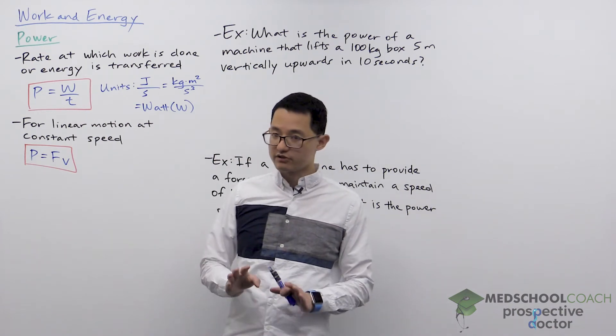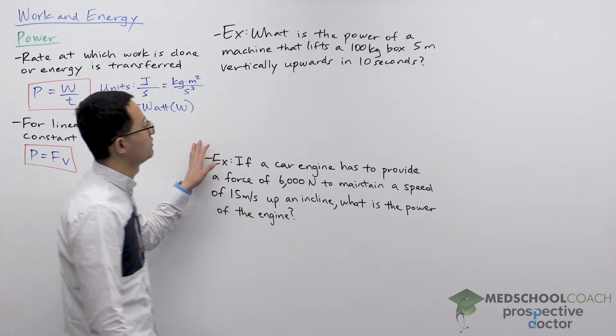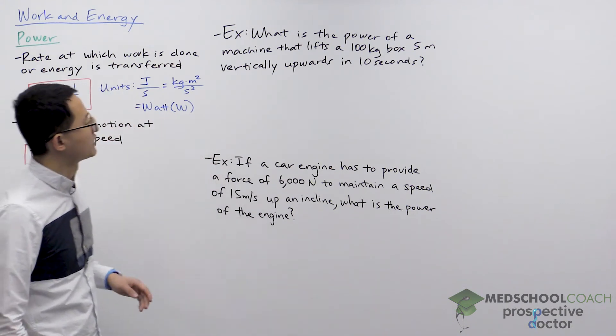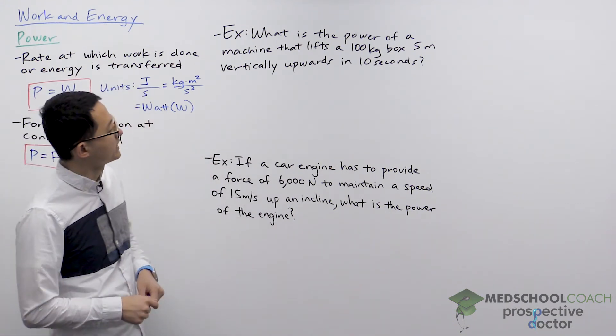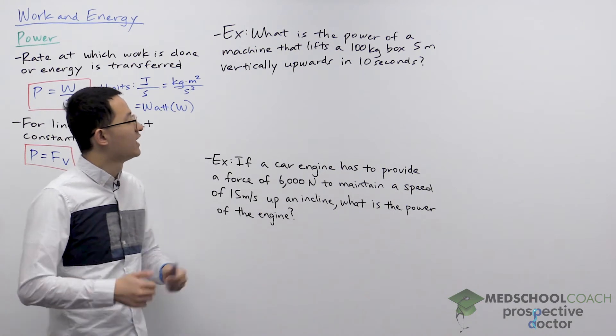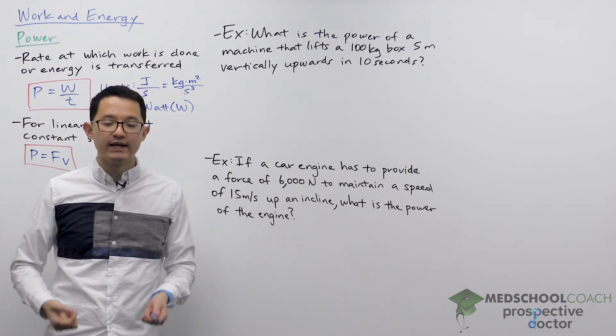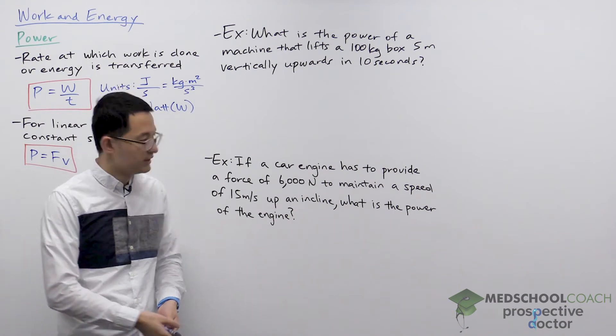Okay, so to look at how these equations work, let's look at a couple examples. In the first one, we want to know what is the power of a machine that lifts a 100 kilogram box five meters upward in 10 seconds.